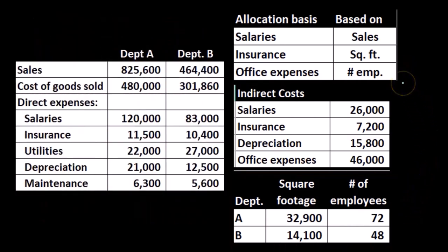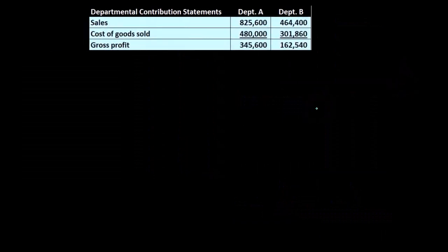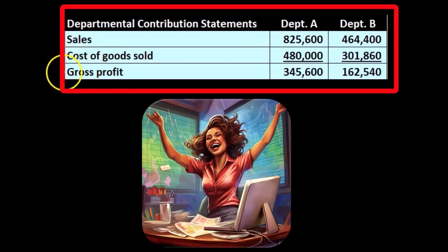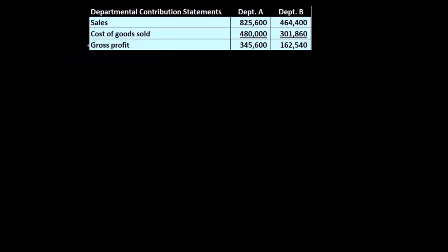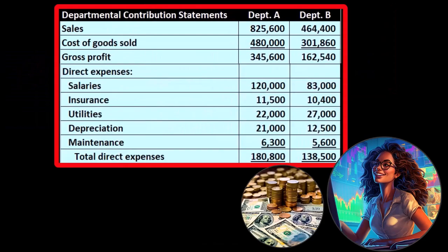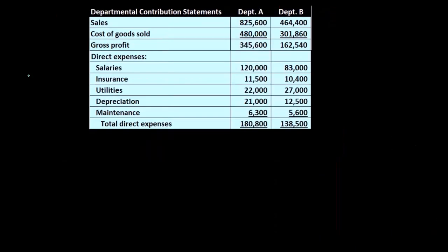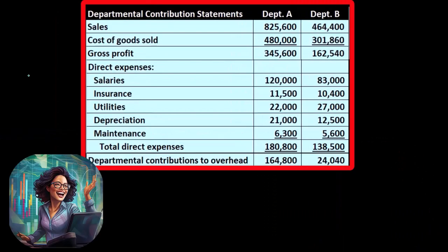Let's go through the indirect expenses first. We'll look at our departmental contribution income statement. We'll have sales, cost of goods sold, and gross profit — these are straightforward standard income statement numbers. Then we have our direct expenses, which are expenses we could apply directly to the department, taken directly from our problem. What we want to concentrate on now is the indirect expenses.